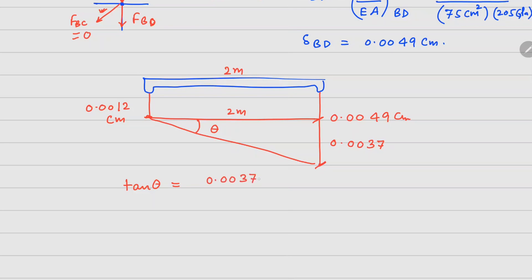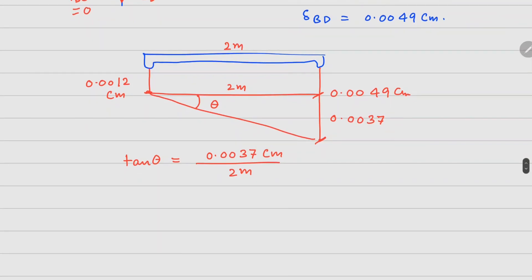So this right here is a very, very small number, and if you calculate this in degrees, this comes out to be roughly 5.3 times 10 to the power minus 6 degrees. So that's the answer.